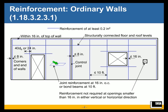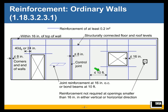There's horizontal reinforcement — either joint reinforcement at 16 inches on center or bond beams at 10 feet. For vertical reinforcement, we need it within 8 inches of any control joint, within 8 inches of corners and end walls, and on either side of openings. For a long solid wall portion, we need reinforcement at every 10 feet. The only difference between the ordinary wall and the intermediate wall in terms of prescriptive reinforcement is that this spacing is reduced to 4 feet for the intermediate wall.